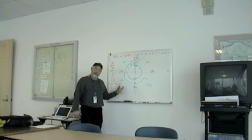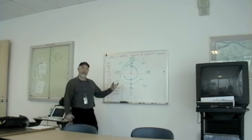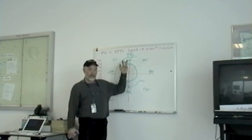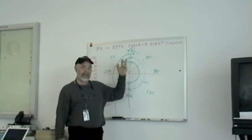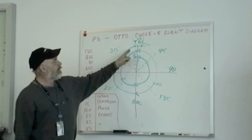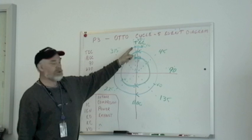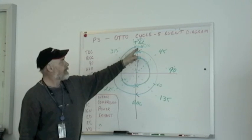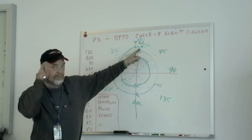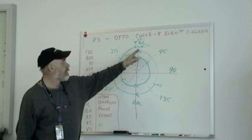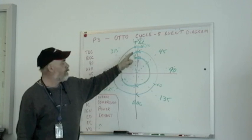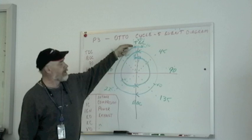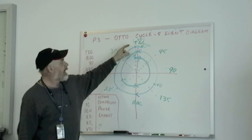What is valve overlap? Valve overlap is when both the intake and the exhaust valve are open at exactly the same time. The intake valve is open 15 degrees before top dead center and the exhaust valve closes 10 degrees after top dead center. Valve overlap happens on the first stroke and the last stroke.